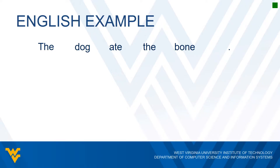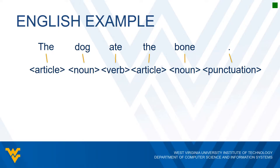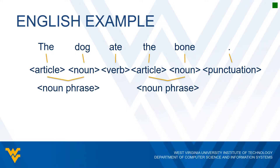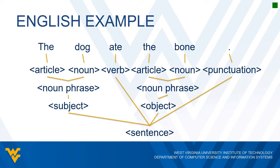We first map out the tokens. The first article and noun form a noun phrase, and the second article and noun also form a noun phrase. So we can think of our sentence as: noun phrase, verb, noun phrase, then punctuation. A subject can be a noun phrase, and an object can also be a noun phrase. So the first noun phrase corresponds to the subject, and the second noun phrase corresponds to the object. Applying the rule again, a sentence is subject, verb, object, punctuation — so this is a valid sentence according to our grammar rules.